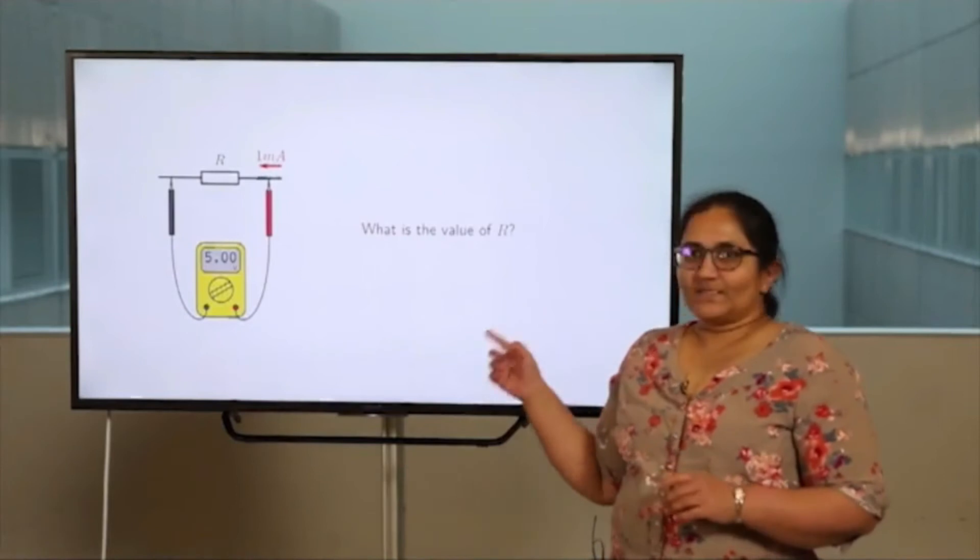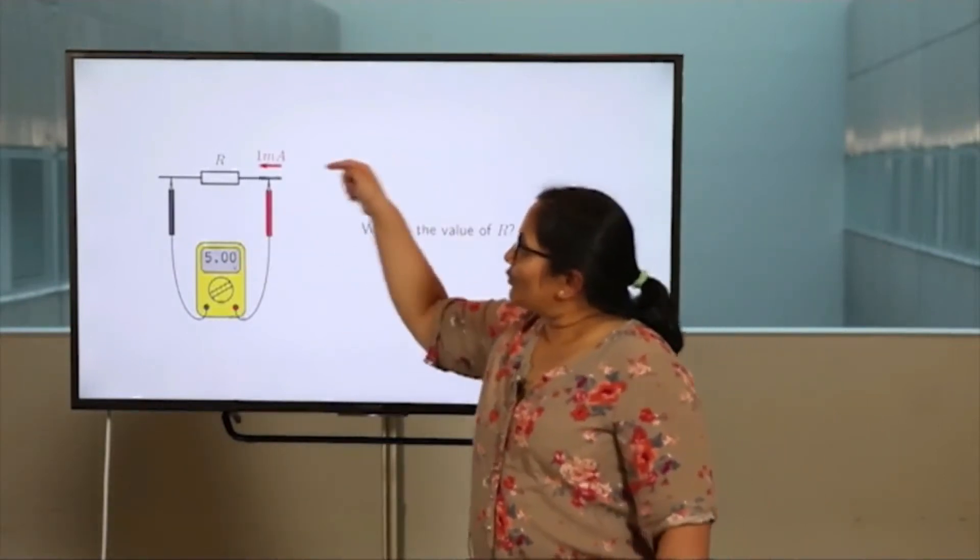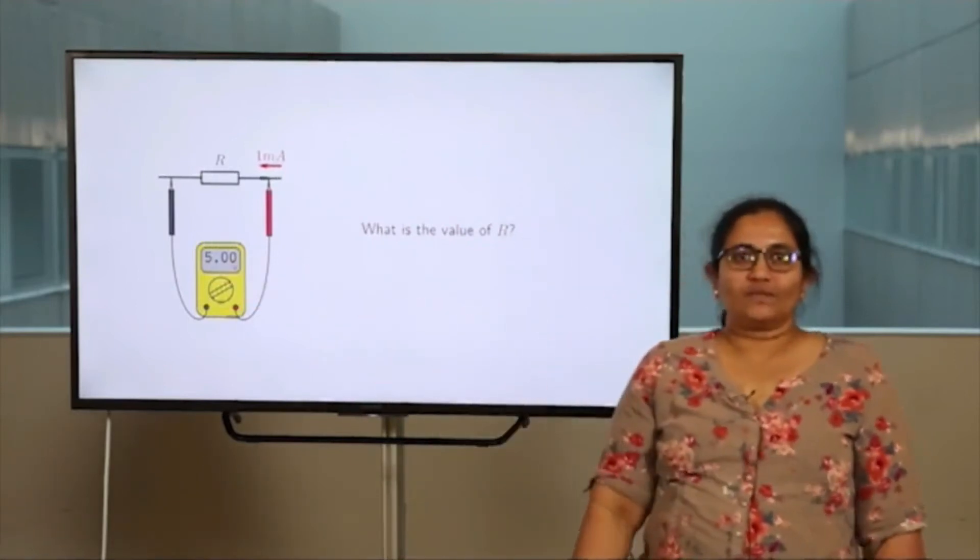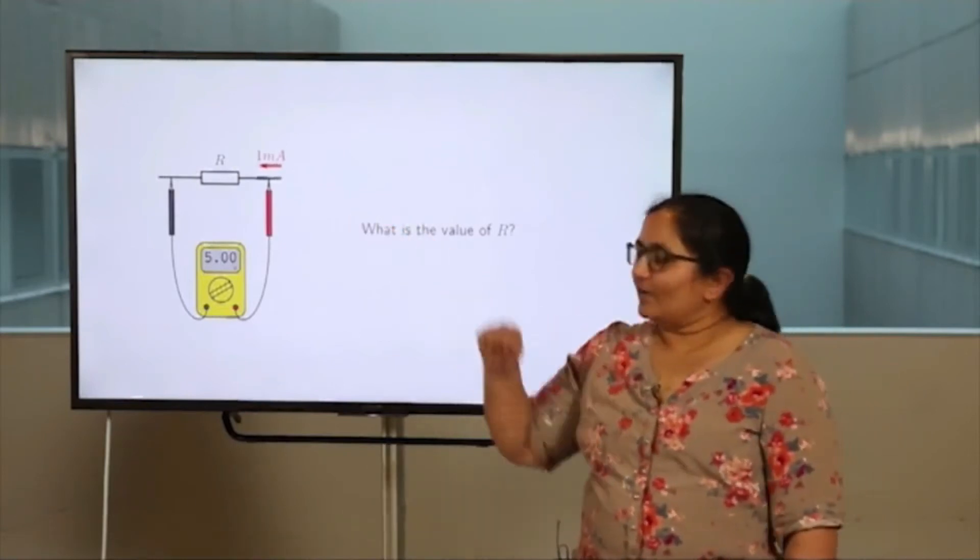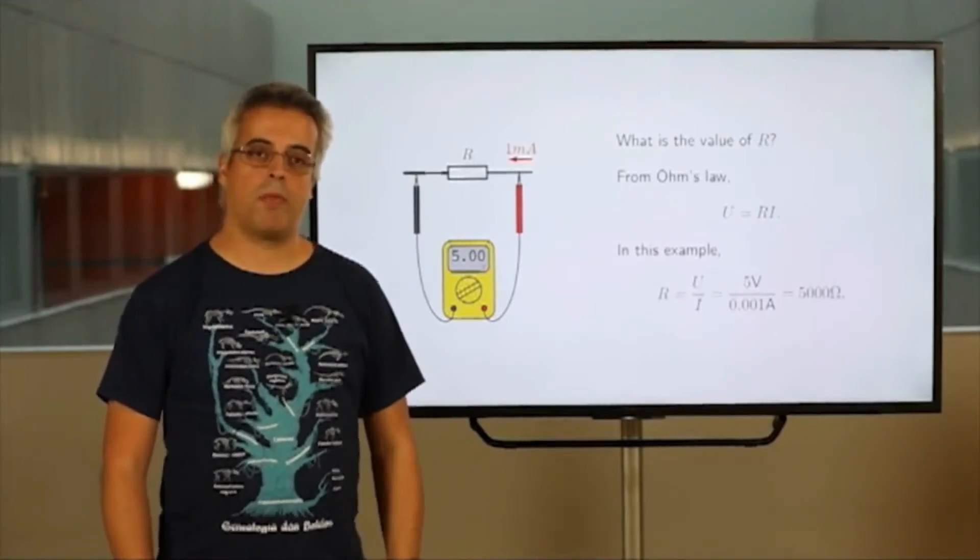Let's start with a single resistor. We attach wires to the resistor, we push 1 mA of current through it, and measure the voltage across the resistor. Then, the question is, can we find the value of the resistance? Yes, we can. We just have to use Ohm's law.